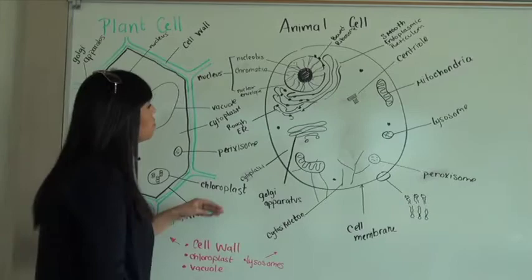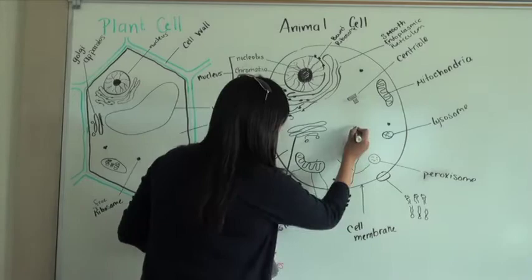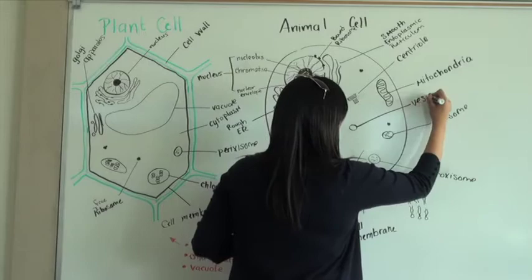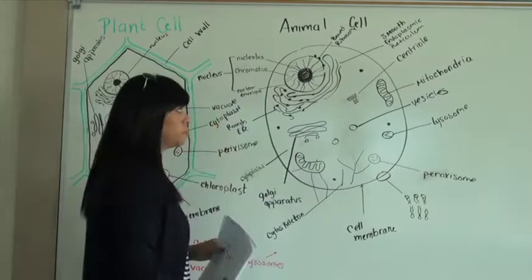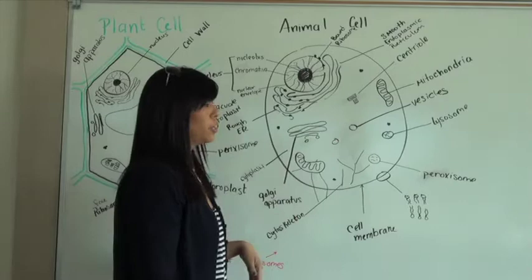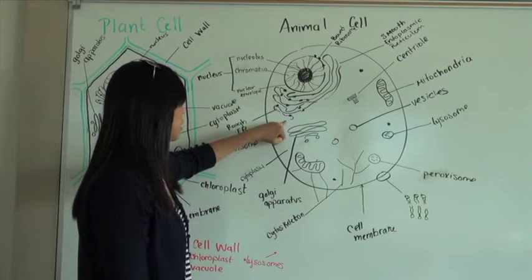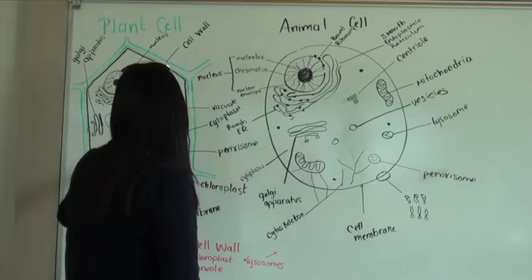We also have our vesicles floating around. Vesicles are pretty much transfer shuttles which allow things to be transported in and out of the cell or moved around from organelle to organelle. These vesicles, for example, can come out of the rough endoplasmic reticulum and then go into this structure which is called the Golgi apparatus.